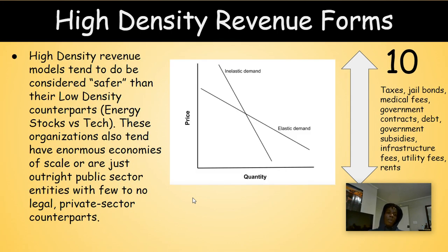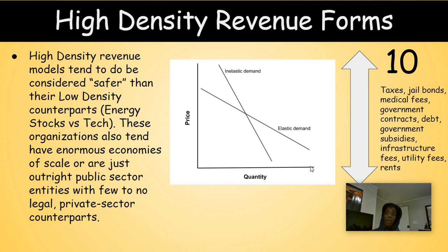High density revenue models tend to be considered safer than their low density counterparts — think of energy stocks being considered safer versus regular tech stocks. These organizations also tend to have enormous economies of scale or are outright public sector entities with few to no legal or private sector counterparts. For example, depending where you live, your energy company might be run by the state or country, while in other places there may be private energy or private garbage collection.